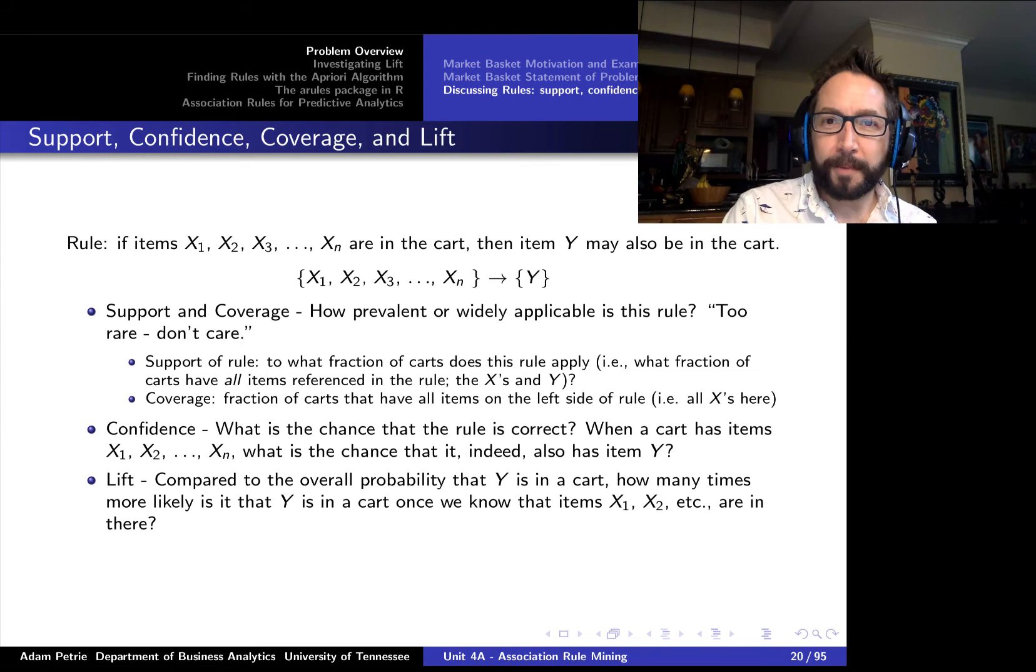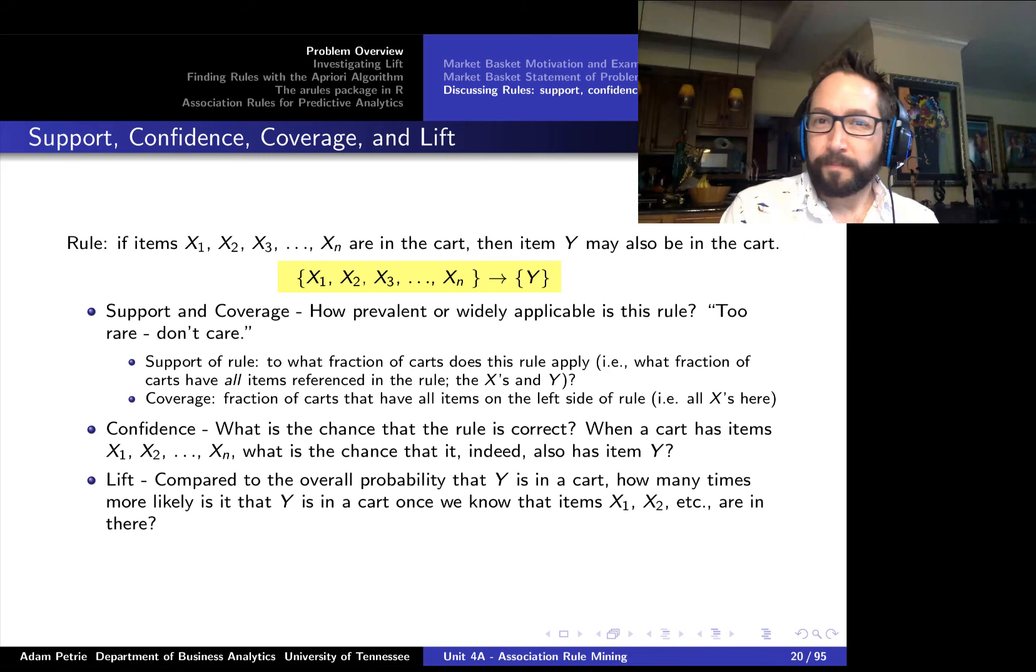All right, so what are some of the numbers, some of these keywords that we'll be using to discuss these rules? Well, here they are. So if we have the rule, if a shopper has items x1, x2 through xn, this combination of items in their cart, then they may also have item y. What do we talk about in regards to that rule? Well, one number that we talk about is the support of that rule. Basically, how applicable is that rule with the transactional data set that we're working from? What fraction of carts have items that contain all of those items referenced in that set, all the x's and y? So essentially, how prevalent is this rule? How many carts have this rule being satisfied? If the rule is just too rare, if it doesn't apply to that many carts, we're just not really going to care about it.